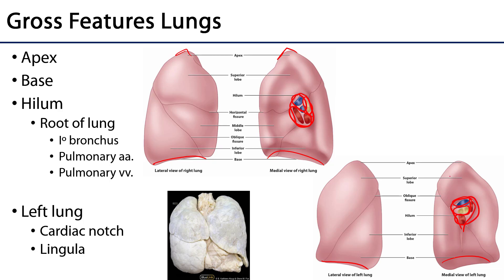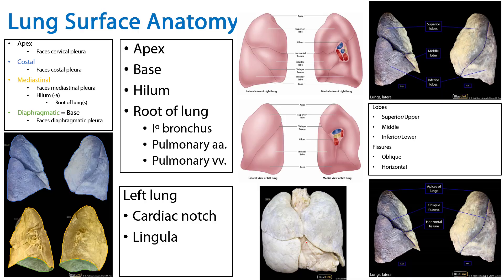In addition to these features, the left lung also has a cardiac notch, which is that space to accommodate the apex of the heart. The inferior portion of that cardiac notch supplied by the superior lobe has a lingula. So we've discussed the various surfaces and gross features of the lungs, as well as the hyla and the contents of the hyla — the roots of the lung — which include primary bronchi, pulmonary arteries, and pulmonary veins.